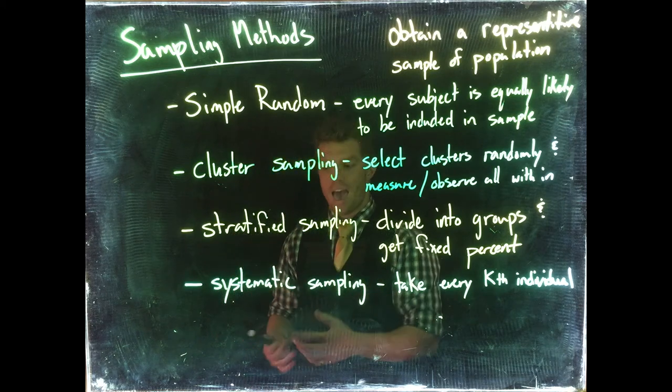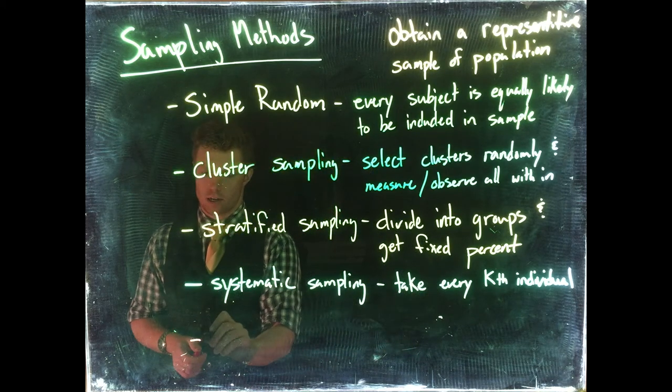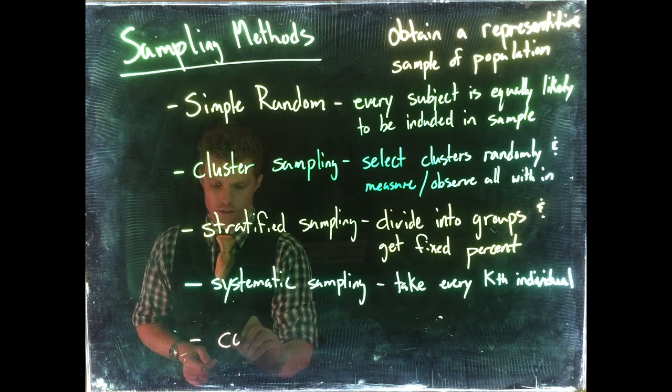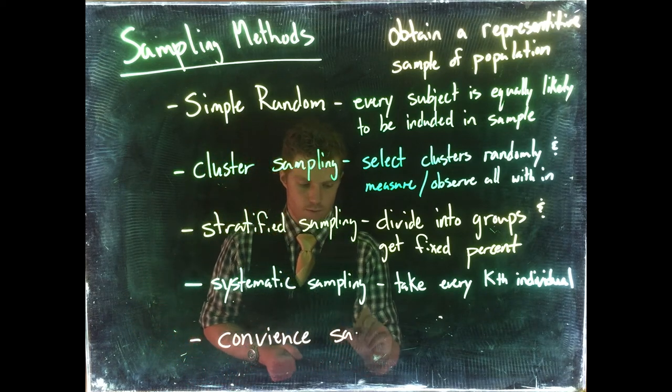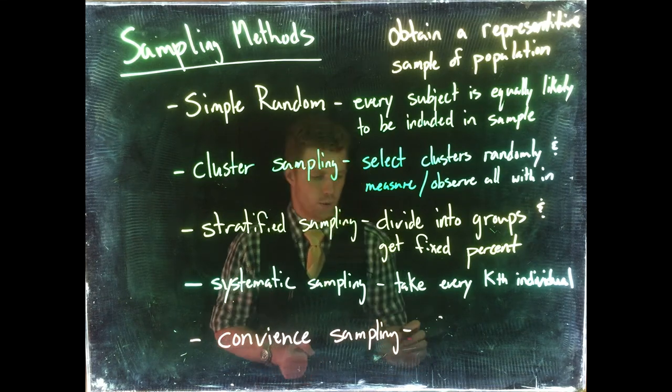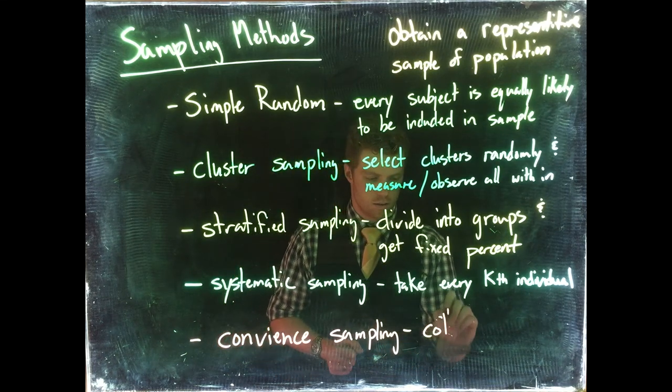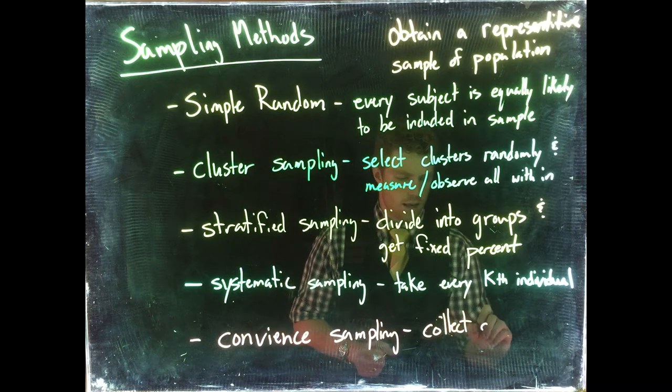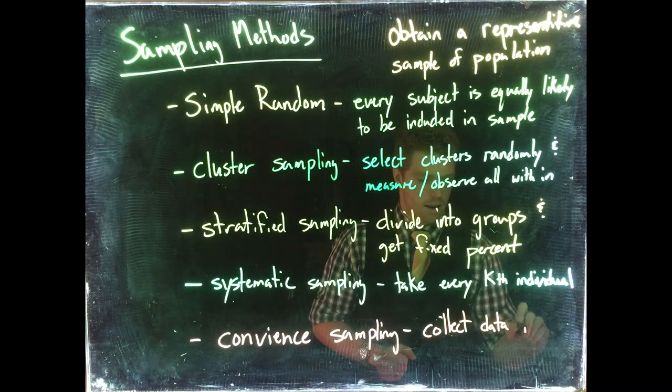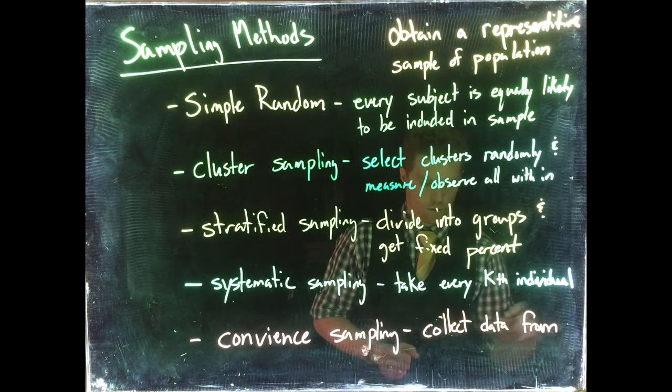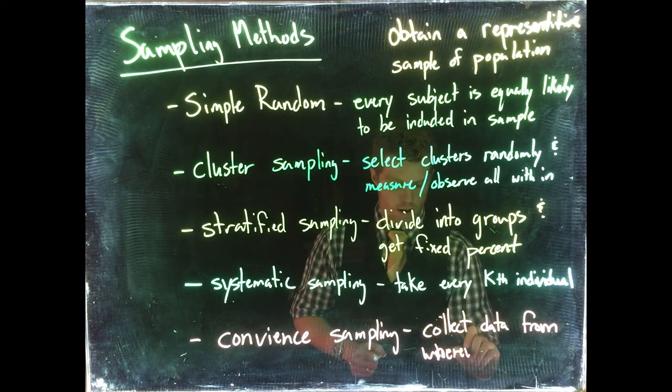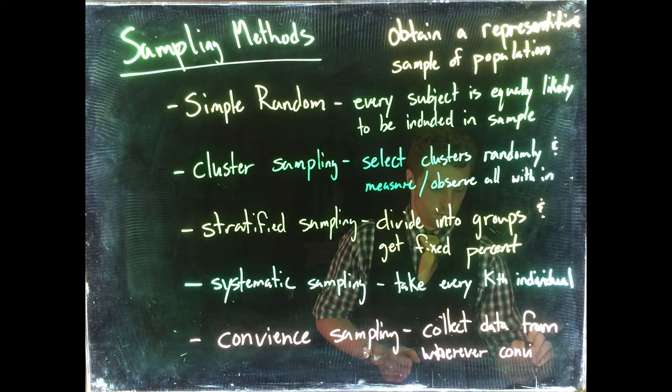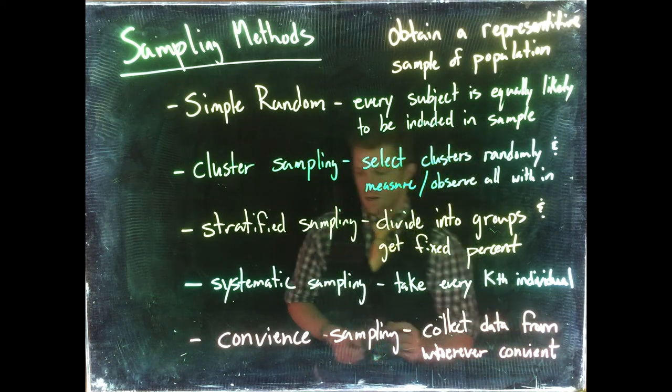Now there is a bad version that we should probably talk about too, and it's called convenience sampling. Here we just collect data from wherever convenient.